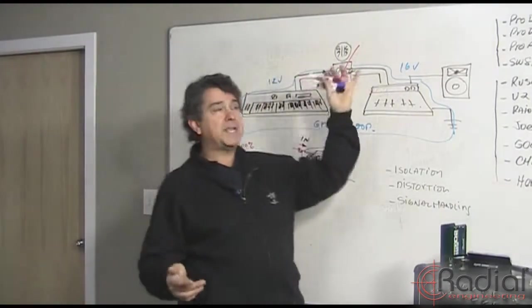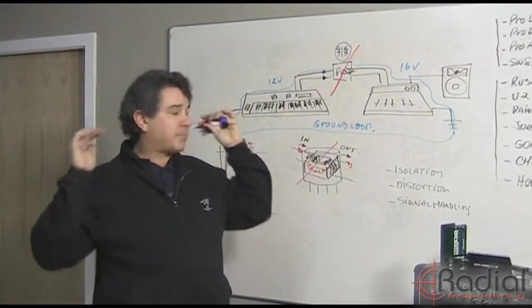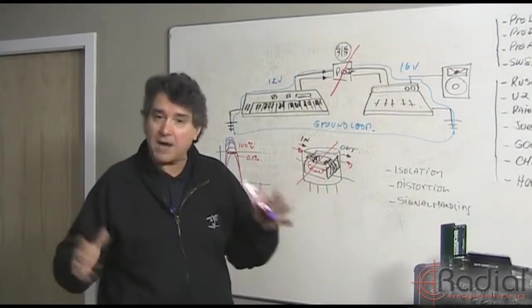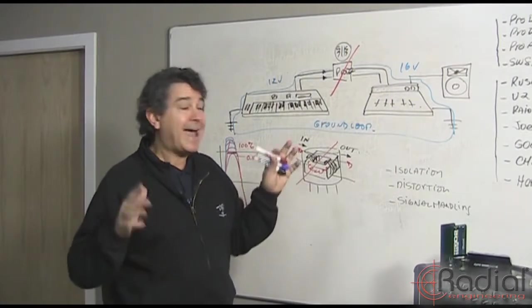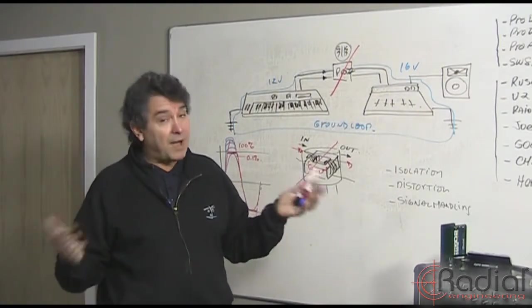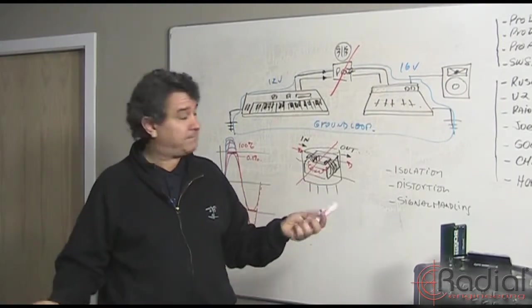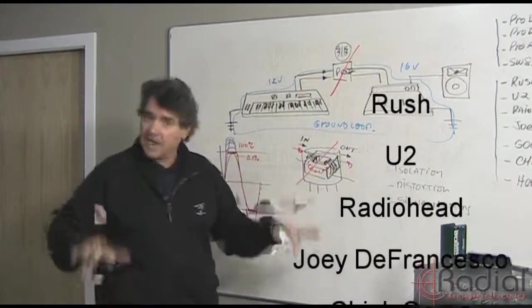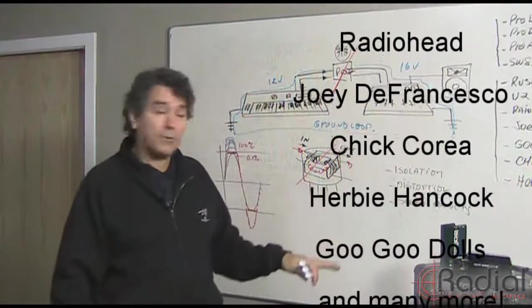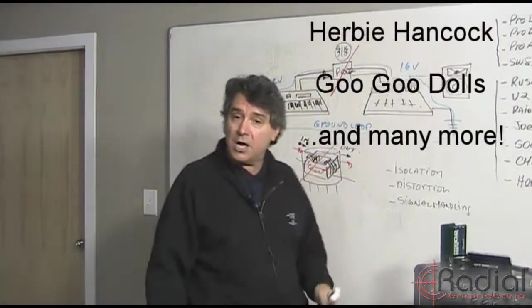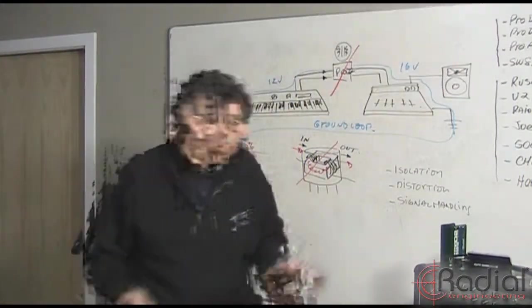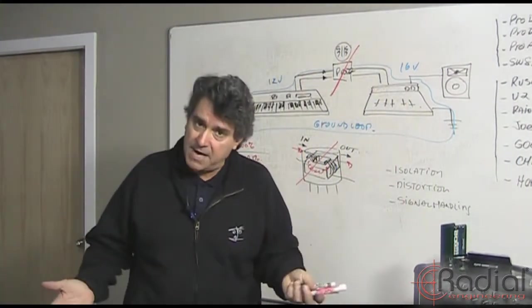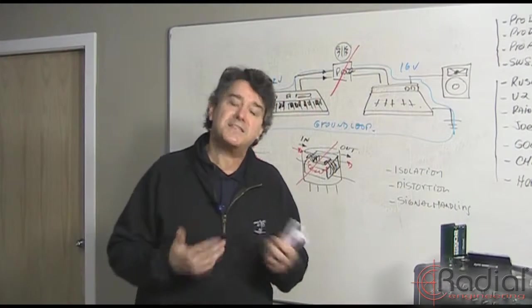The same transformers are used in the Pro D8, Pro D2. We're using the Pro AV1, Pro AV2, SW8. A whole bunch of our products use that same radial transformer. And these are used around the world with the best artists in the world, including Rush, U2, Radiohead, great keyboard players like Joey DeFrancesco, Chikoria, Herbie Hancock, and bands like the Goo Goo Dolls. They're all using the Pro D2 or one of these products in their touring rigs, in the recording studios.